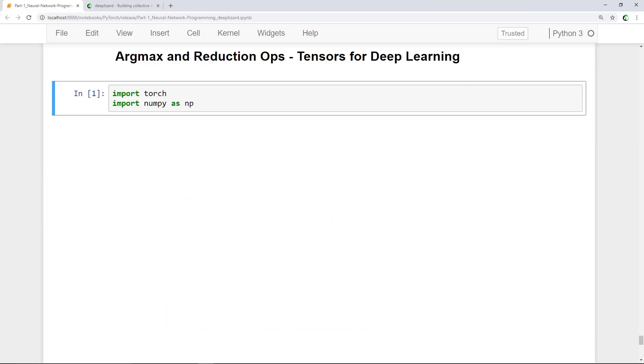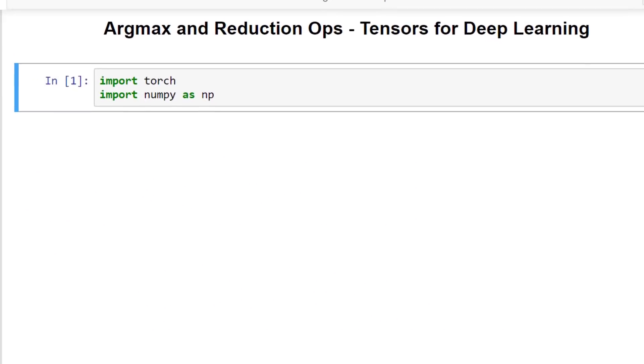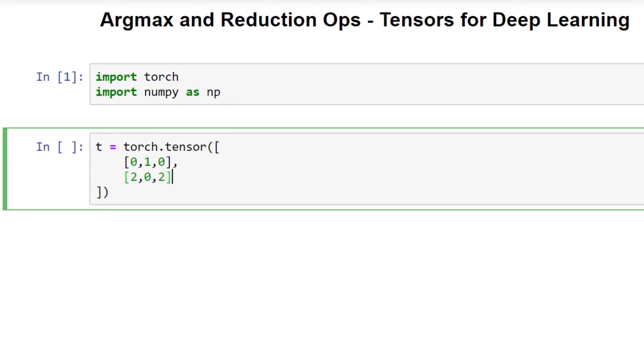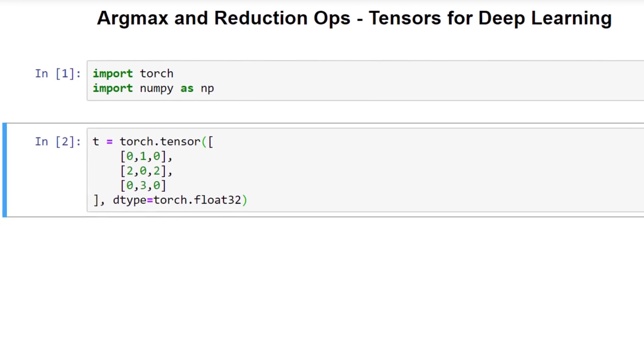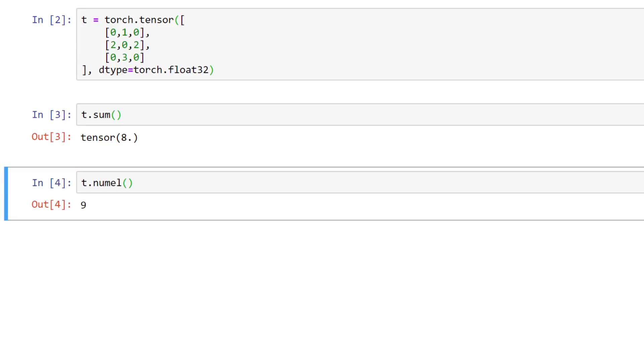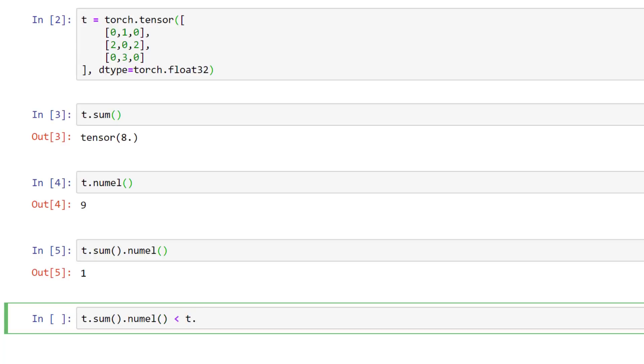Suppose we have the following 3x3 rank 2 tensor. Let's look at our first reduction operation, a summation. Focus on the code, and then we'll break it down. In the first cell, we take the sum of our tensor's scalar components using the sum tensor method. The result of this call is a scalar value tensor.